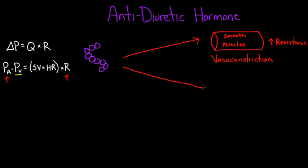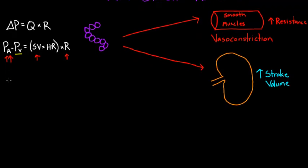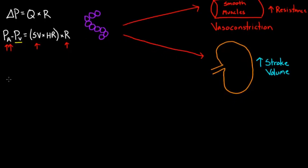The other thing that ADH does is act on the kidney. Specifically, it's going to cause increased reabsorption of water. Increased reabsorption of water is going to increase our stroke volume. If it causes stroke volume to go up, then your arterial pressure is going to go up — maybe doubly. So ADH causes blood pressure to go up for a couple of different reasons. Now let's explore the second point in a little more detail: how it causes stroke volume to go up.